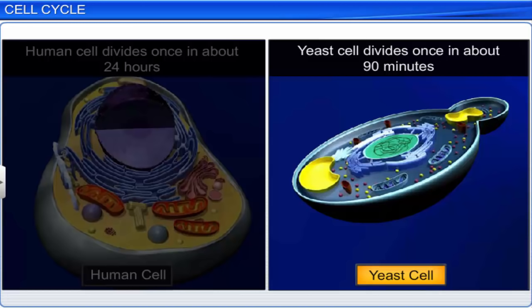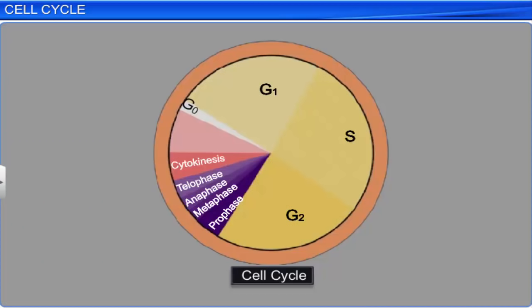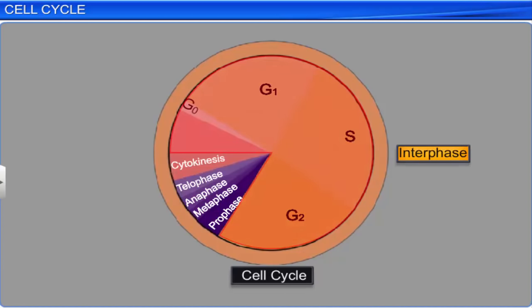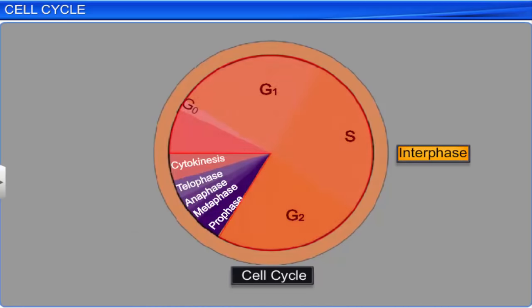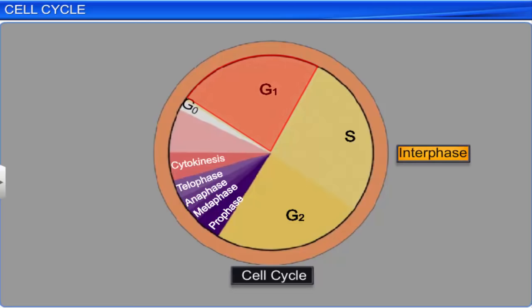The cell cycle is divided into two basic phases: the interphase and the M phase, or the mitosis phase. The interphase is the resting phase, during which the cell prepares to divide by undergoing cell growth and DNA replication in an orderly manner. The interphase is subdivided into three phases: the G1 phase or gap 1, S phase or synthesis phase, and G2 phase or gap 2.